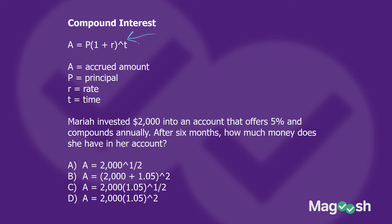Mariah has invested $2,000 — that is the principal, so we put 2,000 where P is. Then one plus the rate: 5% is 0.05, so it's (1 + 0.05). The question will tell you it compounds annually — you'll see that word, and that tells you to use the compound interest formula. Annually is the time period. T asks how many units of that time interval there are. After six months, that's half a year, so T equals one half.